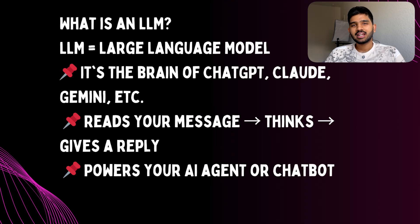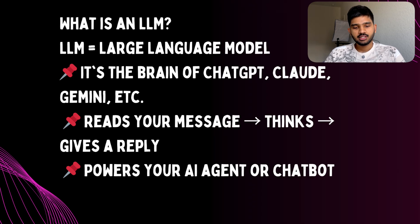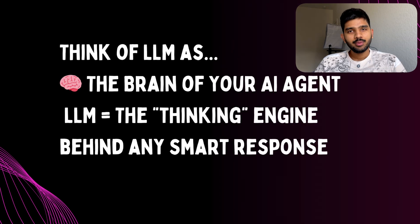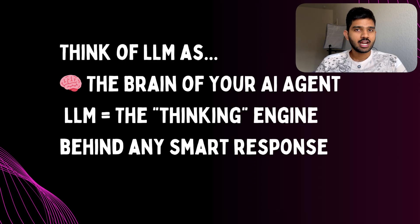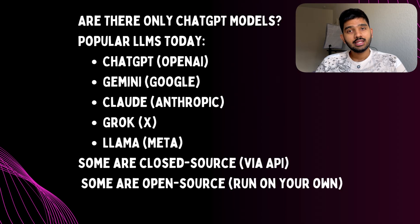So what exactly is an LLM? LLM stands for Large Language Model — that's just a fancy name for the brain that powers tools like ChatGPT. It's the thing that reads our message, thinks about it, and gives us a smart reply. When we build an AI agent — for example, a travel assistant or chatbot — the thinking part is done by the LLM. So in this case we can call the LLM the brain of our chatbot or travel assistant.